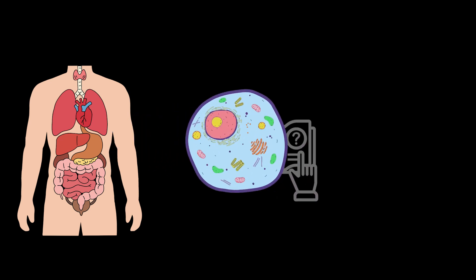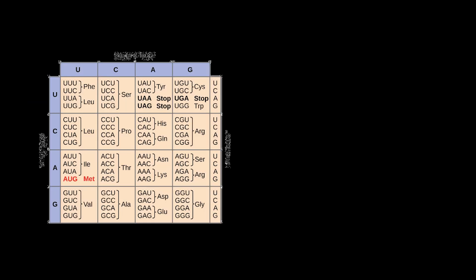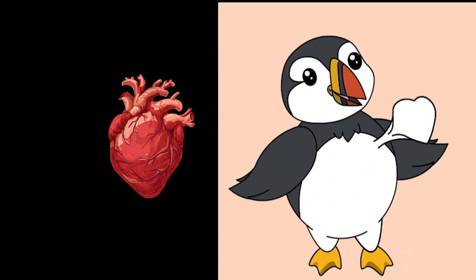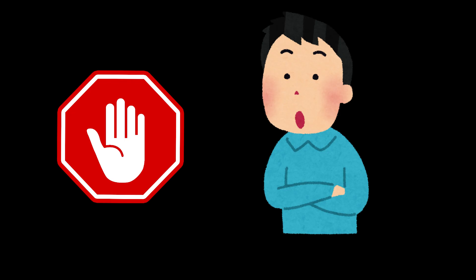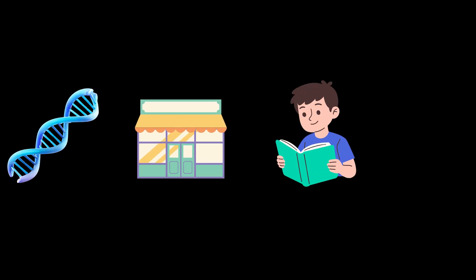Inside every cell of your body, there's a tiny instruction manual, a long molecular code that tells the cell what to build, when to grow, and how to function. This code doesn't look like words or numbers. It looks like a twisting ladder made of chemicals. This is DNA, and the science of understanding how DNA stores, reads, and passes on information is called genetics.